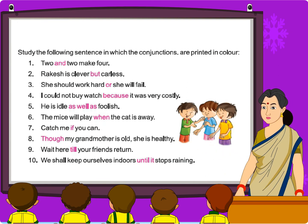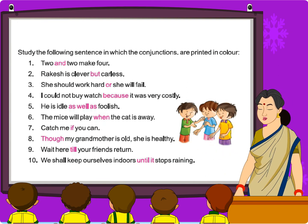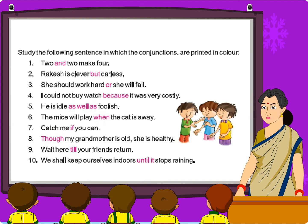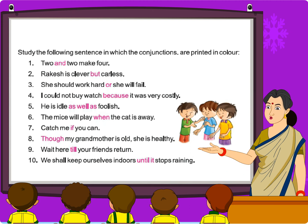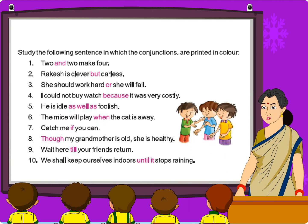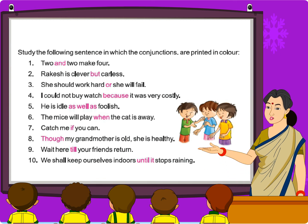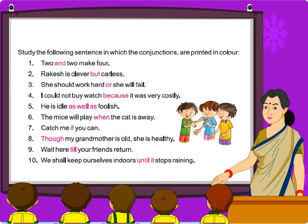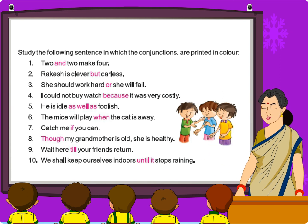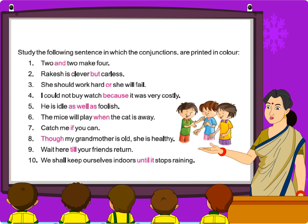Two and two make four. Rakesh is clever but careless. She should work hard or she will fail. I could not buy the watch because it was very costly. He is idle as well as foolish. The mice will play when the cat is away. Catch me if you can. Though my grandmother is old, she is healthy.